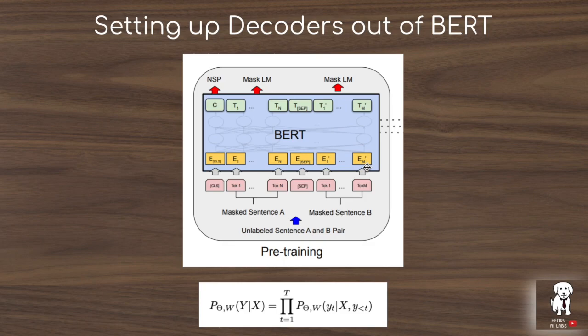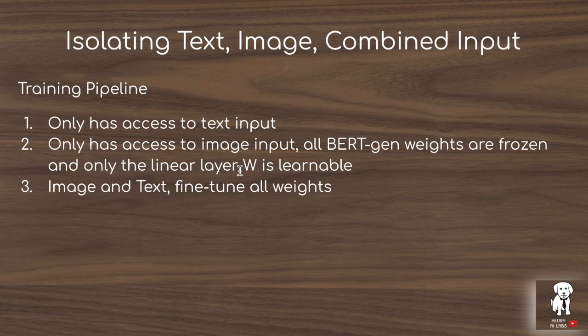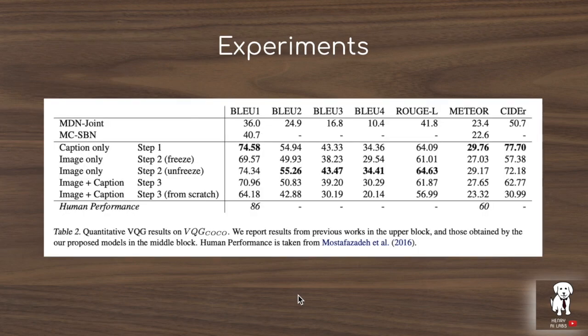The training pipeline in 'BERT Can See Out of the Box' consists of three steps: first, the model has only text input and learns to ask questions by fine-tuning on a question generation dataset. Second, it has access only to the image input with all other weights frozen, just learning the linear projection layer W that maps Faster RCNN embeddings down to 768×1 vectors. Third, the image and text representations are combined and all weights are fine-tuned.